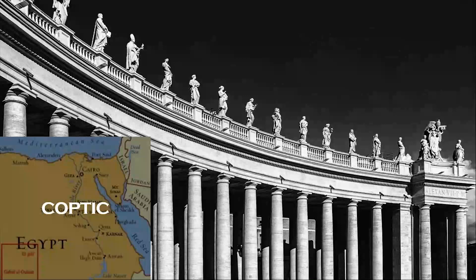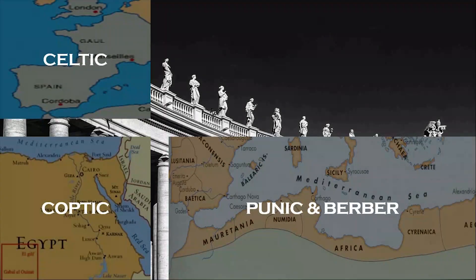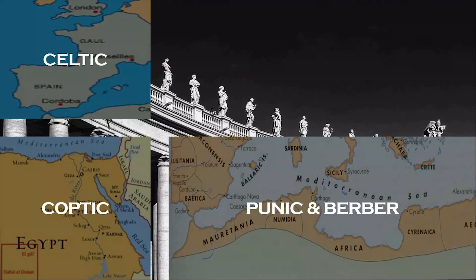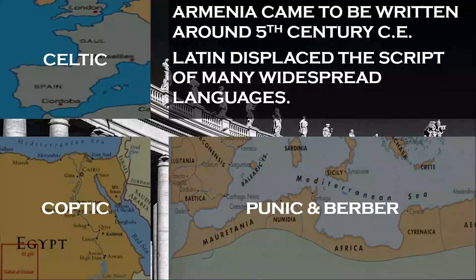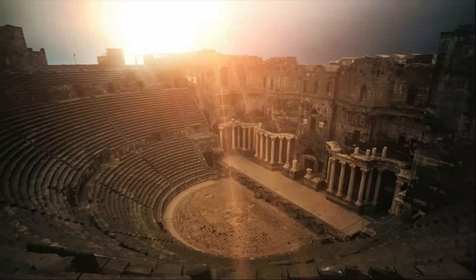The Roman Empire was a multilingual empire. The Egyptians spoke Coptic, North Africans conversed in Punic and Berber, and in Spain and the northwest, people communicated in Celtic. Many of these languages did not originally have a script, making those linguistic cultures oral. Coptic had a developed script before the third century CE, and Armenian came to be written from the fifth century CE. Celtic ceased to be used after it was replaced by Latin.